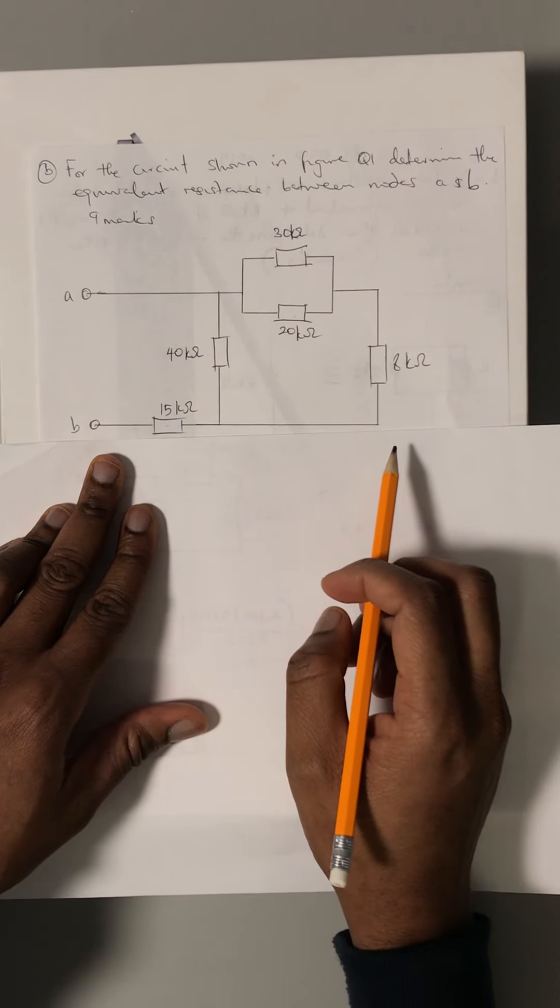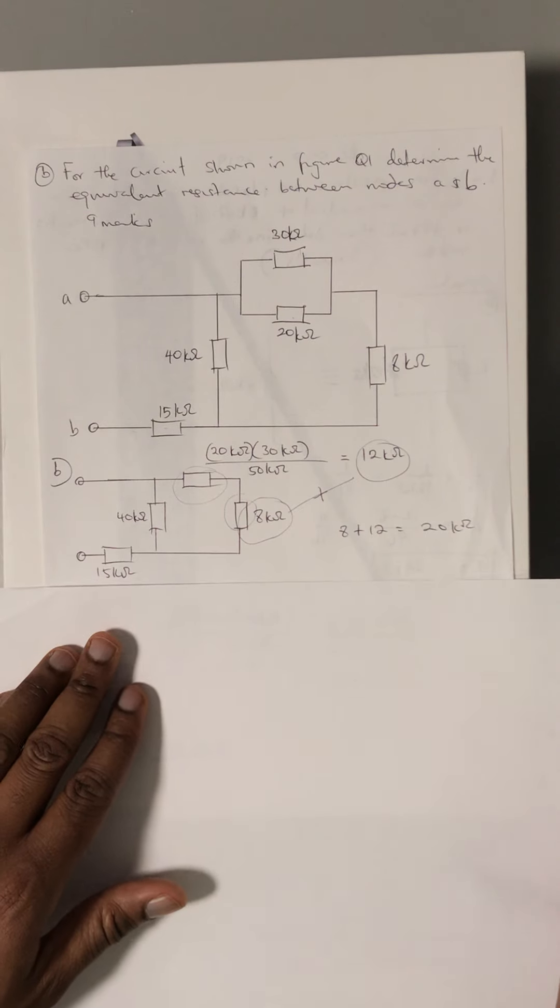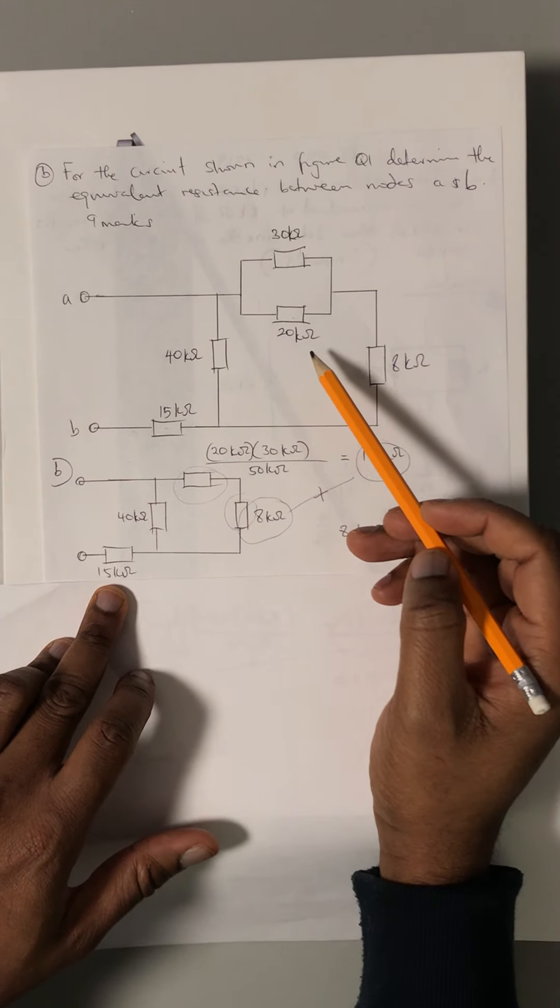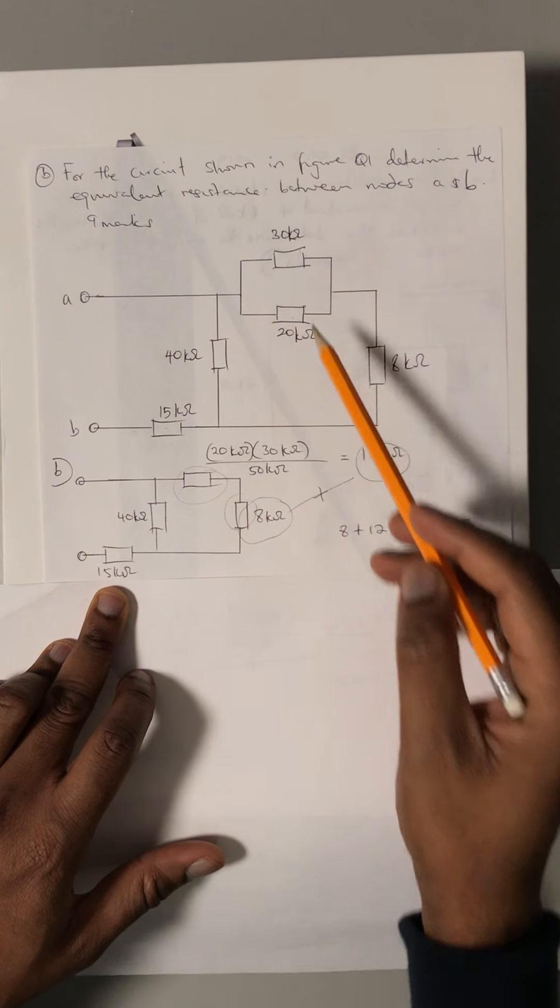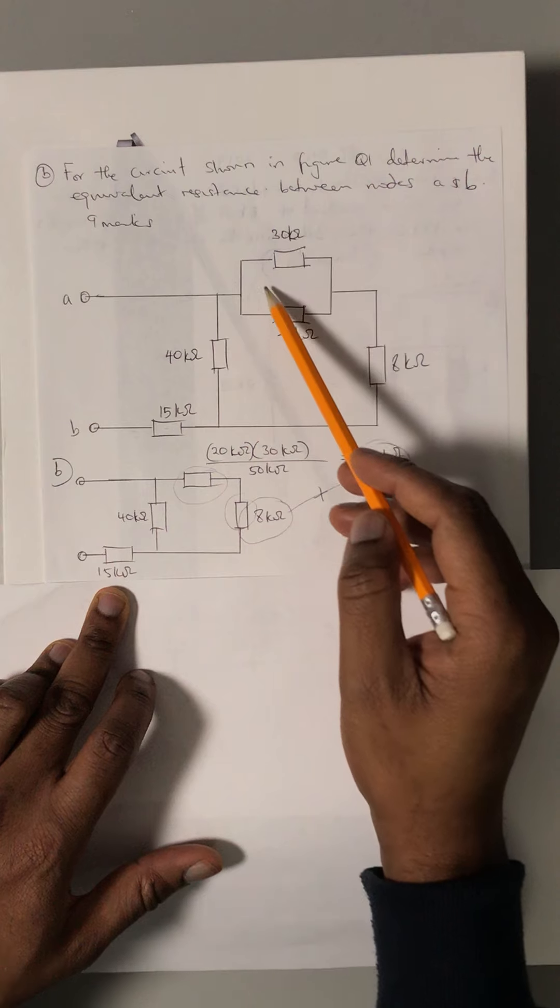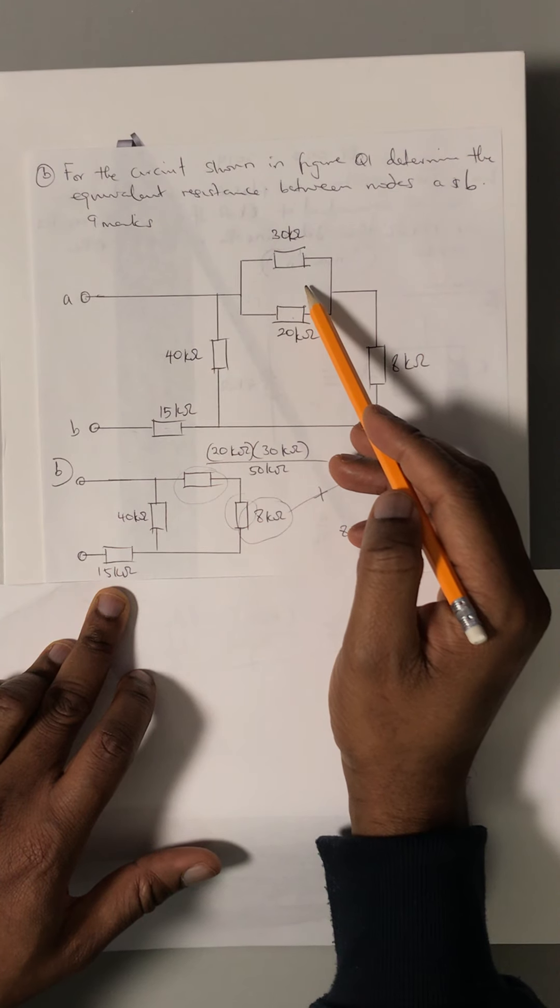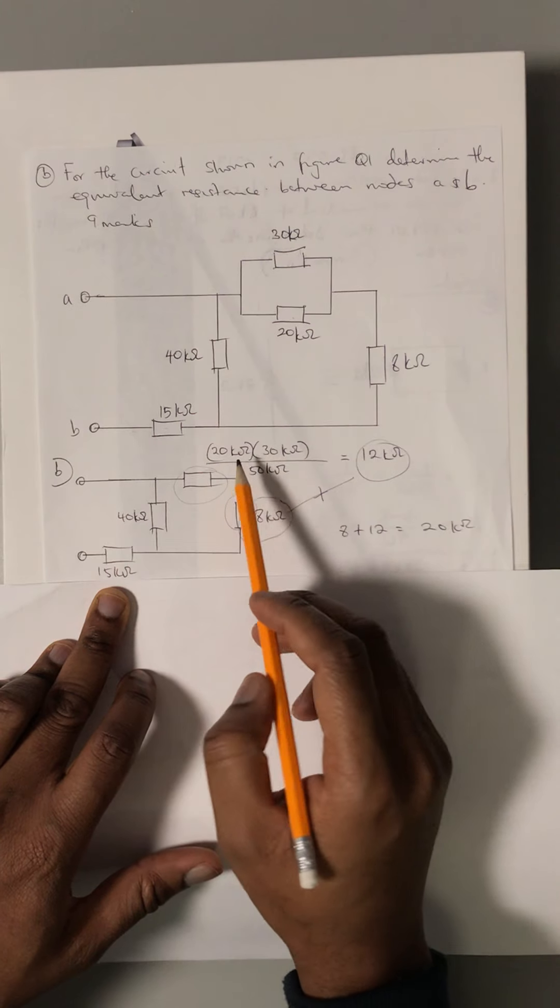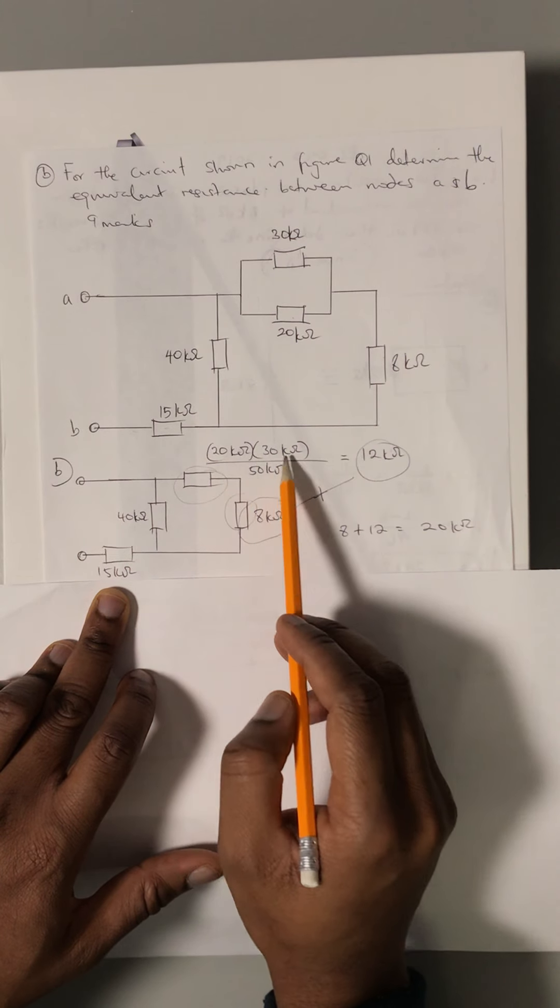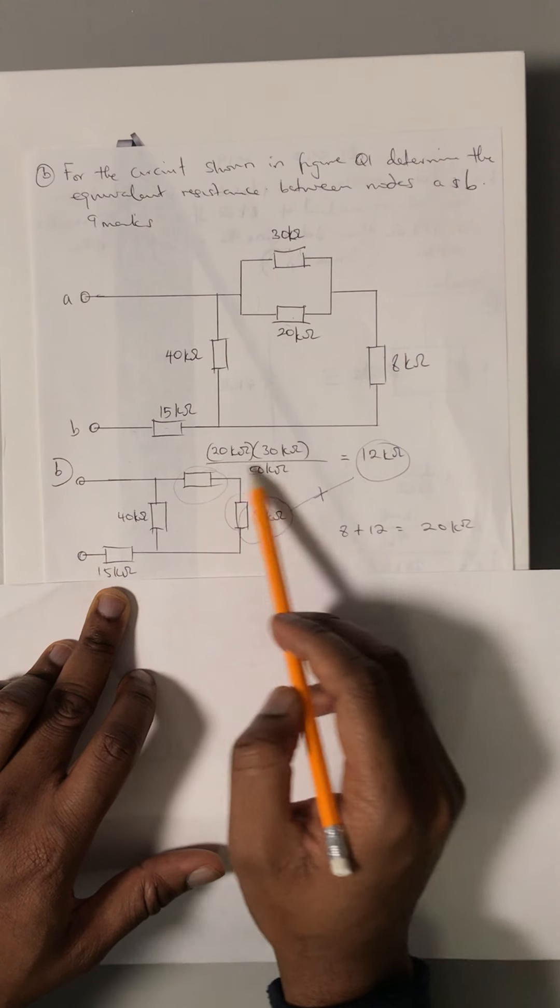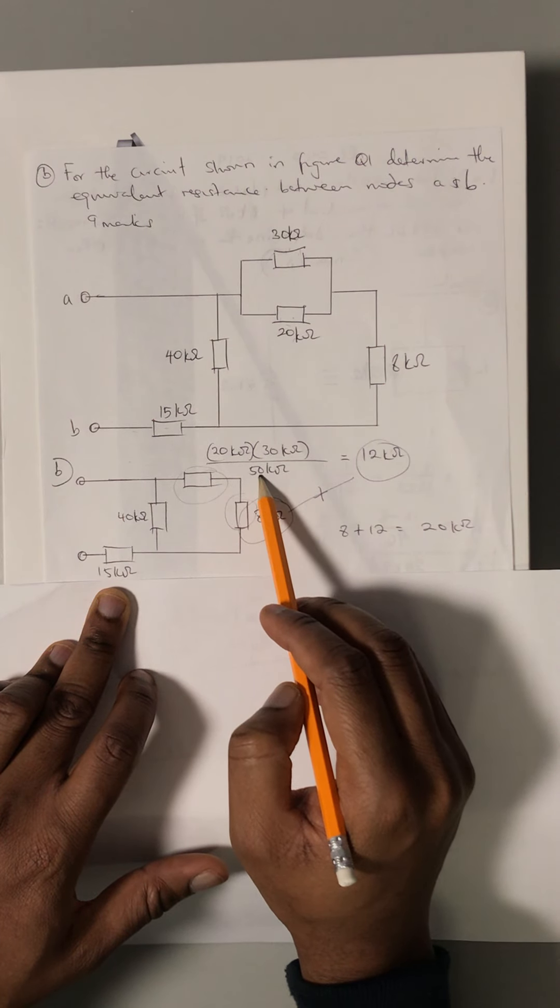In order to calculate the equivalent resistor, we first elaborate on our circuit by converting our two resistors which are in parallel to series using the formula of equivalent resistor, which is 20 ohms multiplied by 30 ohms, all over the addition of the two, which is 20 plus 30 equals 50.